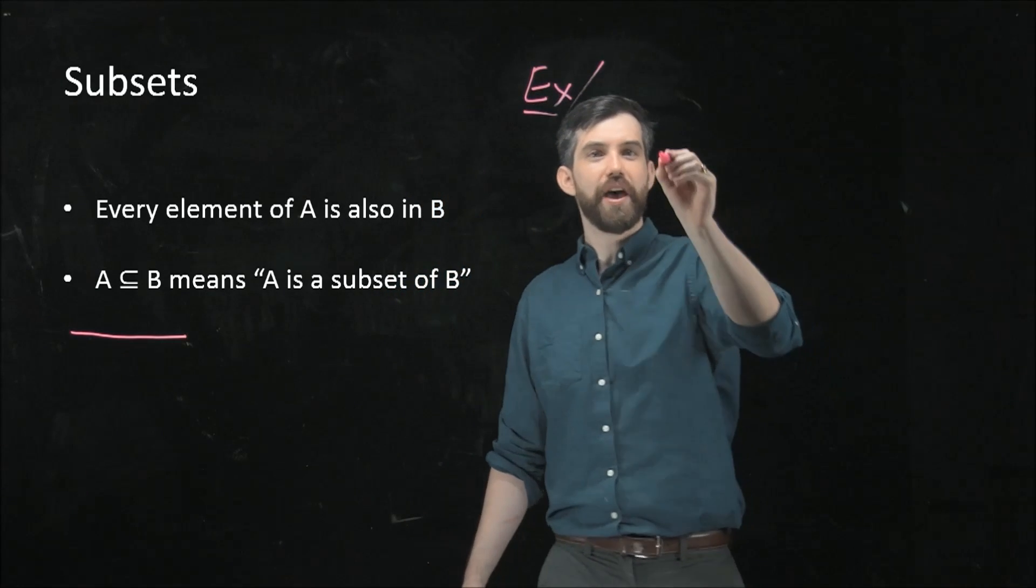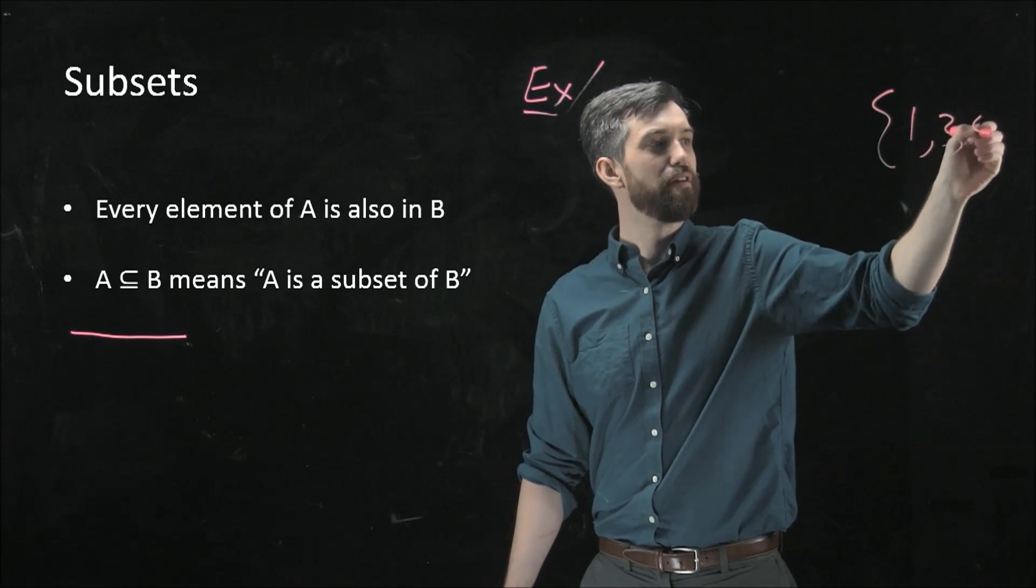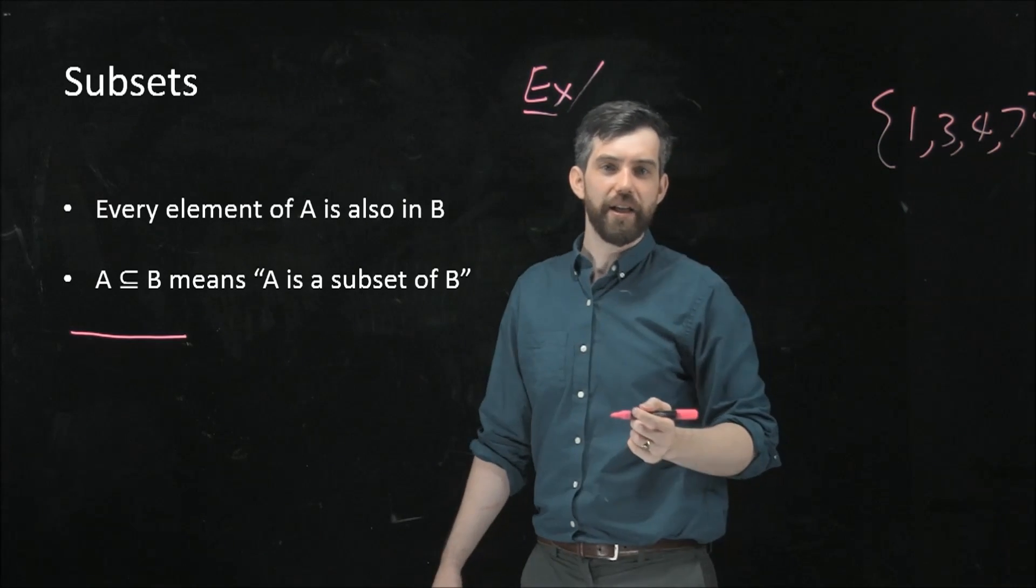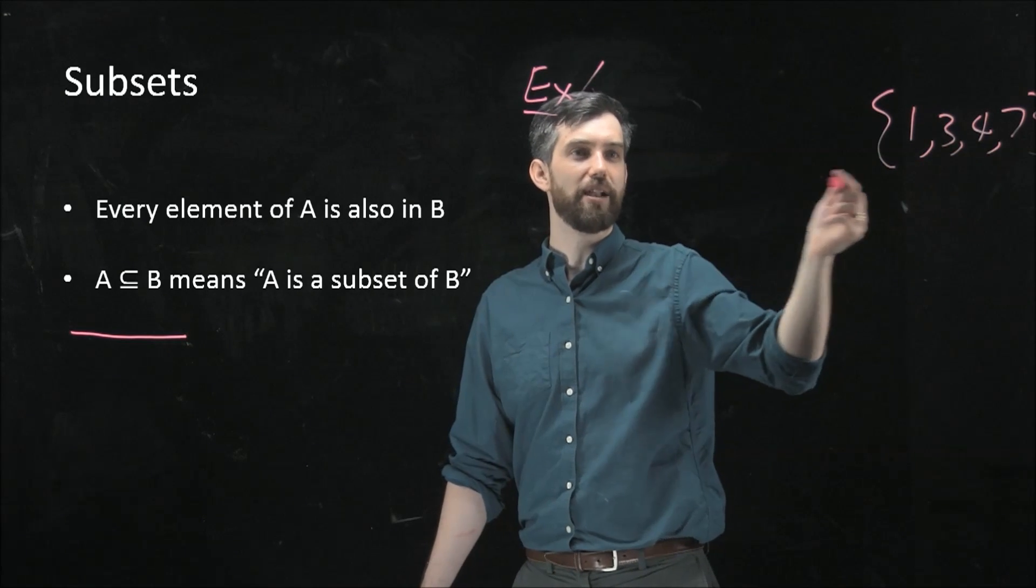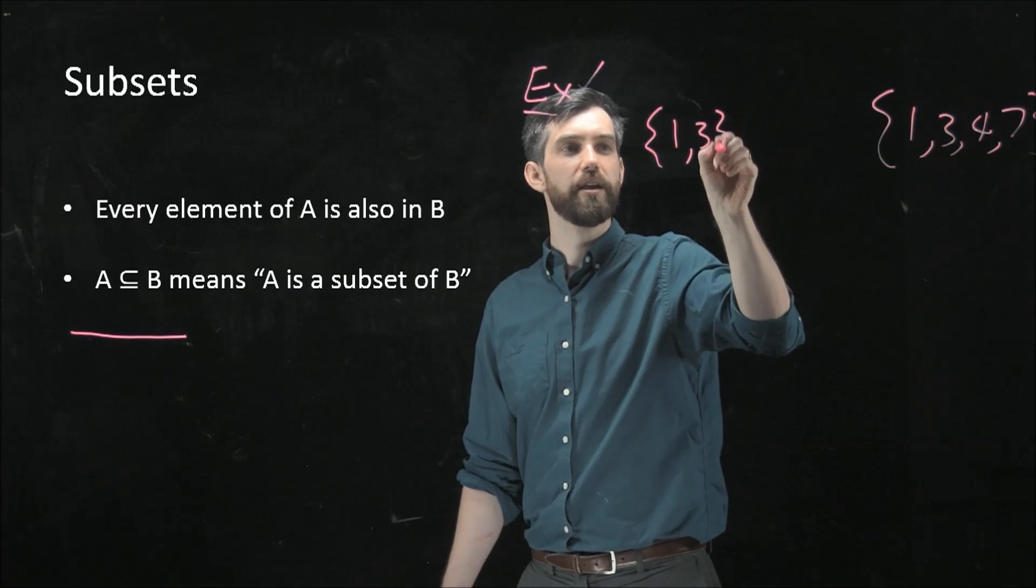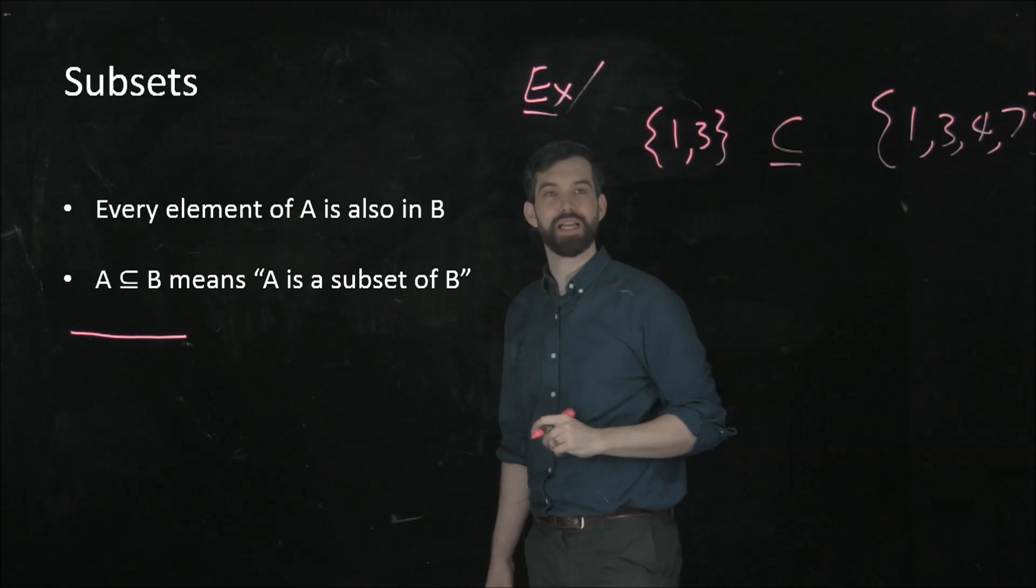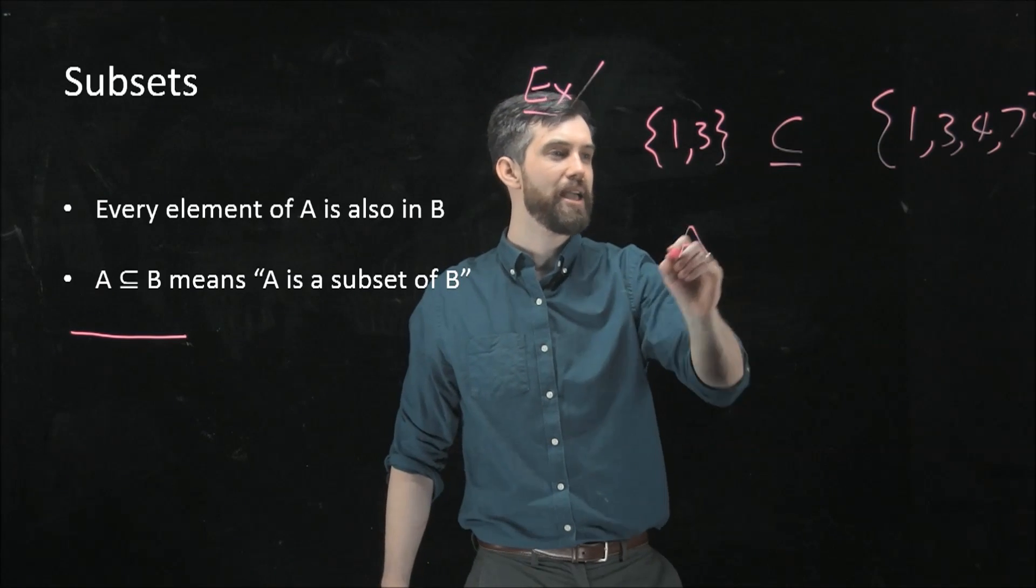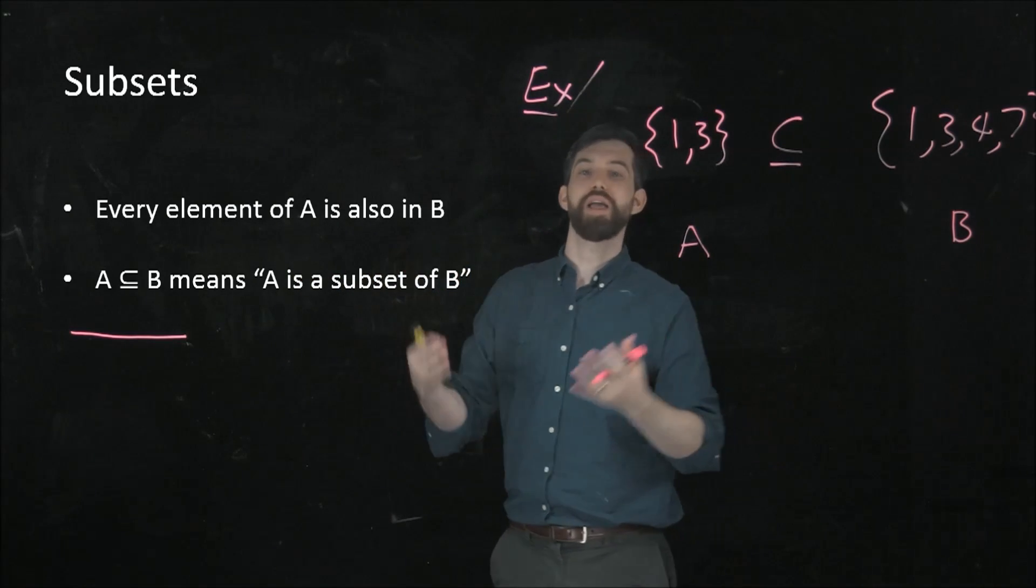So let's take an example of this. I want to imagine that I have the set, maybe my B could be {1, 3, 4, 7} again. That's my big set. And then a subset of it is some sub-collection of these elements. So for instance, I could say the set {1, 3} is going to be a subset of {1, 3, 4, 7}. Because every element that is in A here, the left-hand side is going to be my A, is also inside of B. B has more elements. That's why A is a subset.